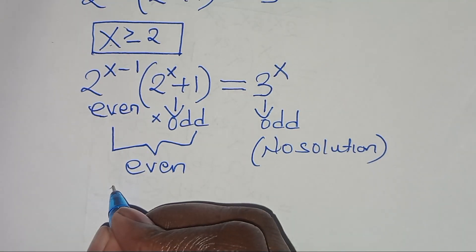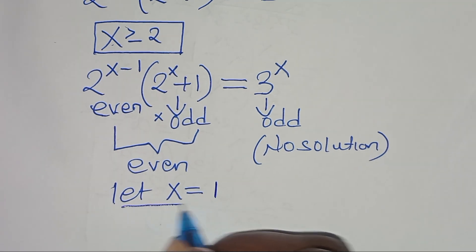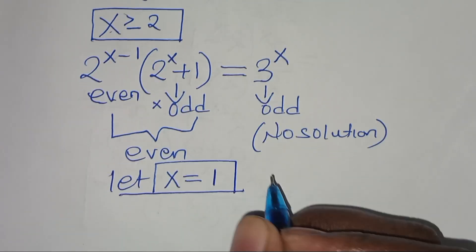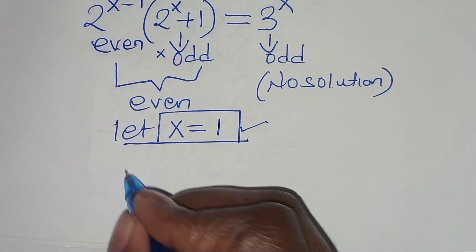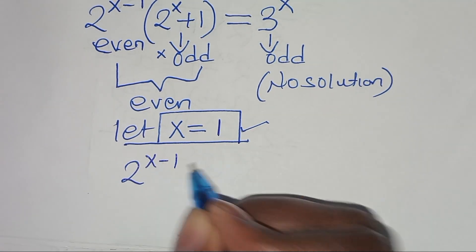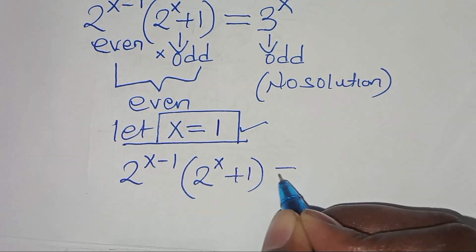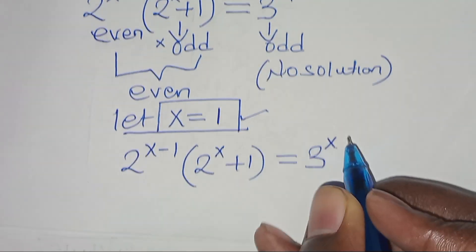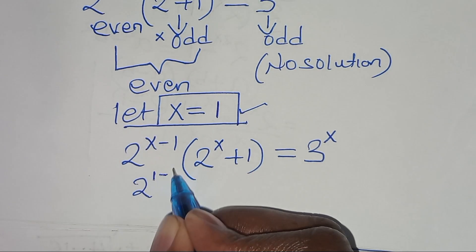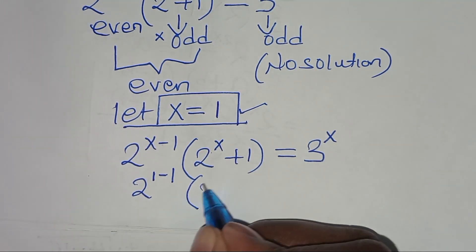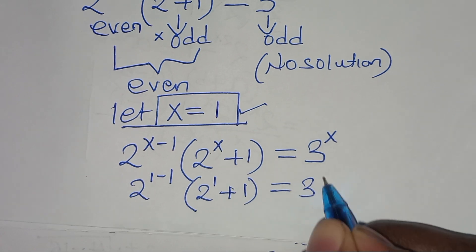Let's proceed to check x equals 1. Substituting into 2^(x-1) times (2^x plus 1) equals 3^x: we have 2^(1 minus 1) times (2^1 plus 1) equals 3^1.